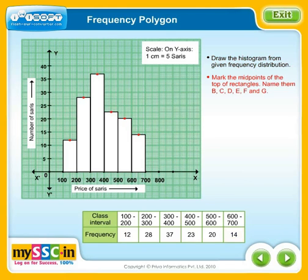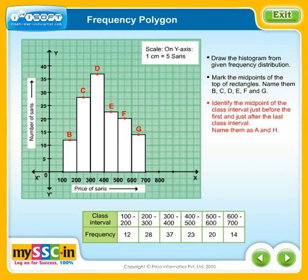Mark the midpoints of the top of the rectangles and name them B, C, D, E, F, and G. Identify the midpoint of the class interval just before the first and just after the last class interval, and name them A and H.